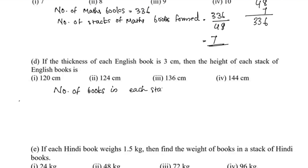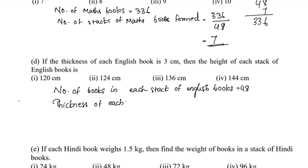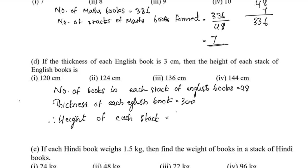Next question about English book stacks. Each stack has 48 books. If each book is 3 cm thick, the height of each stack = 48 × 3 = 144 cm. Option 4 is correct.